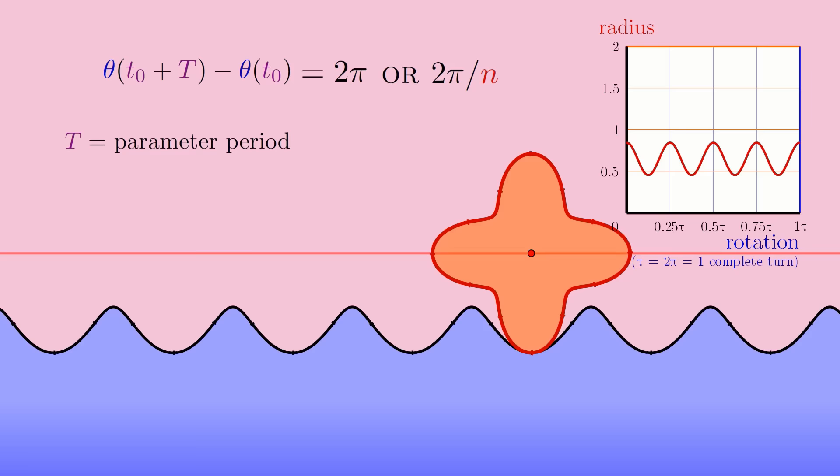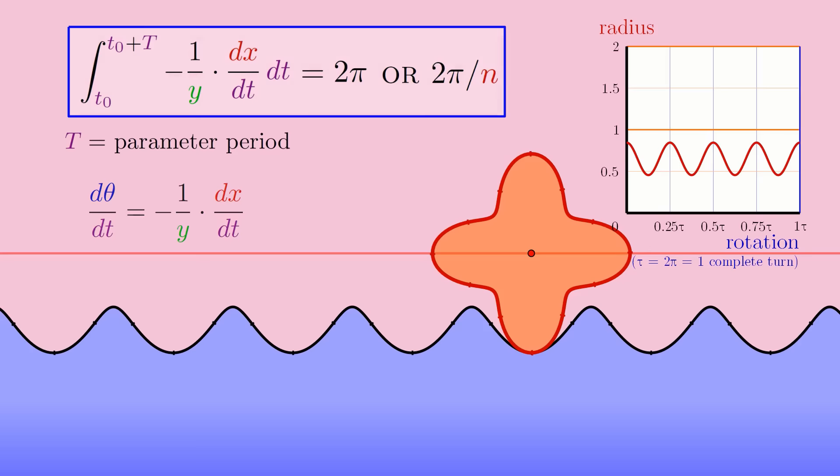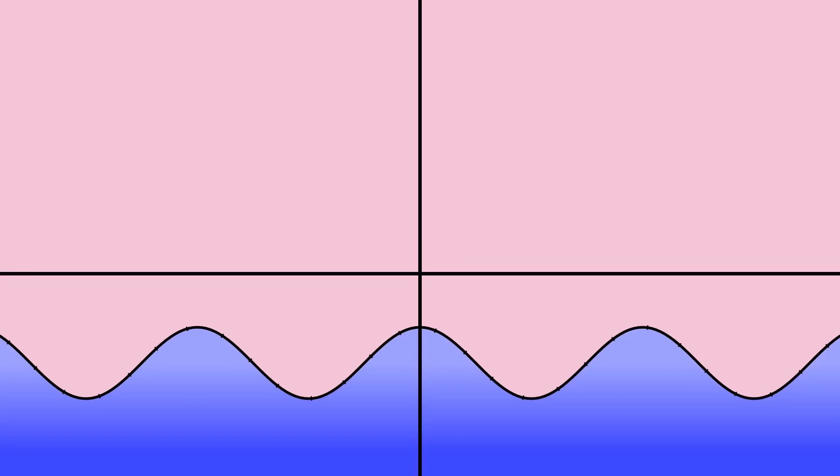By rewriting the left-hand side as an integral of the derivative of theta, we can relate it to the road functions x and y. To get a closed wheel, we need the integral of negative 1 over y times the derivative of x, over a period, to equal 2pi, or an integer fraction of 2pi.